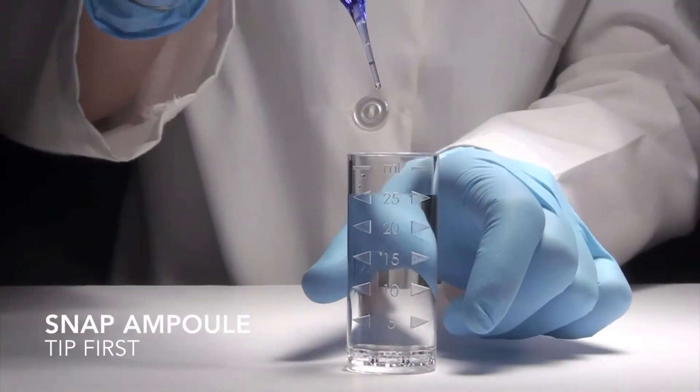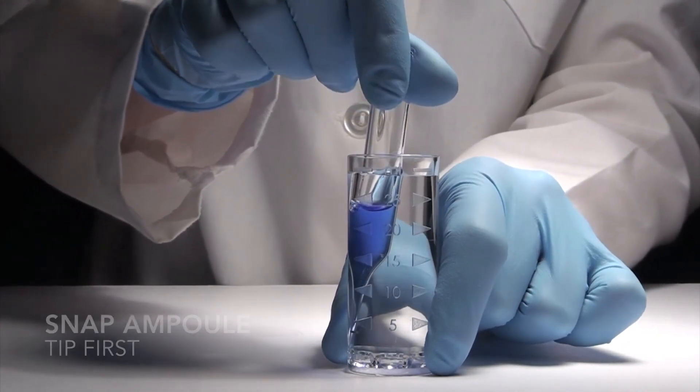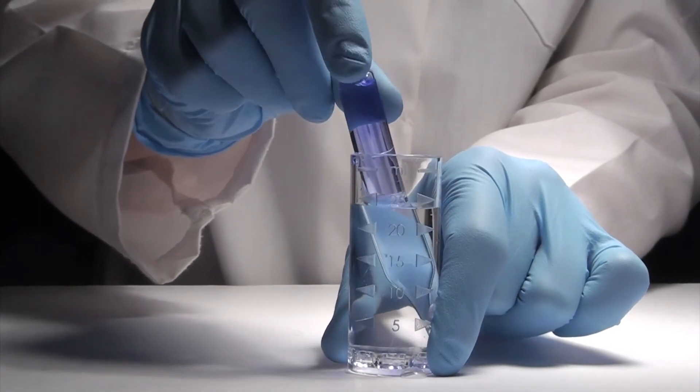Immediately place the Vacuvial ampoule from which the reagent blank value was generated, tip first, into the sample cup. Snap the tip. The ampoule will fill, leaving a bubble for mixing.